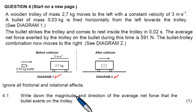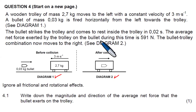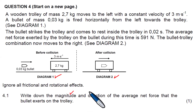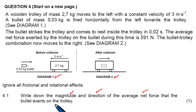We need to find the magnitude and direction of the average net force that the bullet exerts on the trolley. We need the average net force that the bullet exerts on the trolley, and it is only one mark.